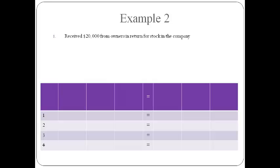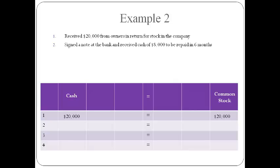Let's talk through another example. Set up the columns in a row for each transaction. As you read each transaction, determine what is being exchanged. Each transaction consists of something that is received and something that is given up. In the first transaction, the company receives cash in exchange for giving up ownership. Cash is received and common stock is issued.